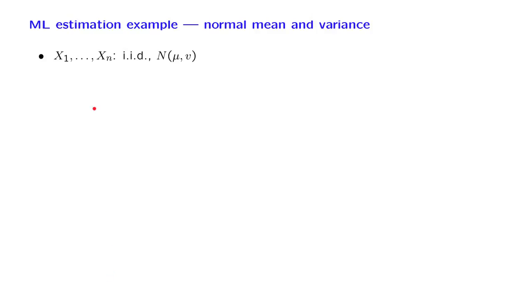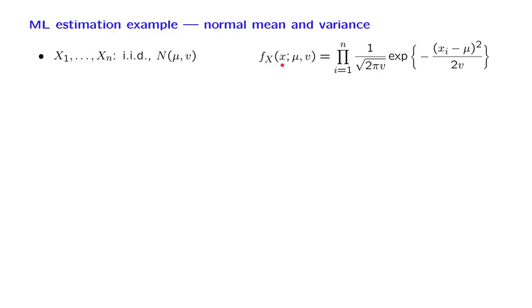Let us now move to our second example, which will be a little more complicated. We have n random variables that are independent and identically distributed, all with a normal distribution with a certain mean and variance. Both the mean and the variance are unknown, and we want to estimate them from the observations. The first step is to write down the likelihood function — the probability density function for the vector of observations given some parameters. Because of independence, the joint distribution is the product of the PDFs of the individual x_i's.